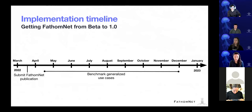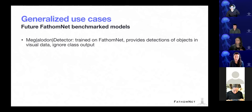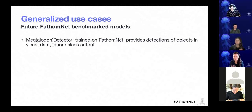The next phase of this project is benchmarking generalized use cases. Our group has spent a lot of time brainstorming what might be valuable generalized use cases for the community, and also what kinds of models we could be curating or maintaining over time as we get more data into FathomNet. The first is what we're calling a megalodon detector — or meg detector — a riff on the terrestrial MegaDetector. This object detector would be trained on FathomNet to provide detections of objects in visual data.